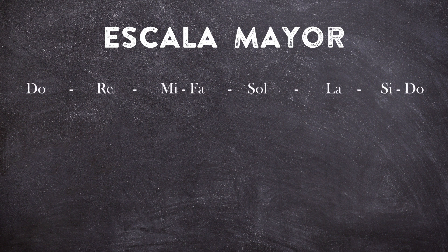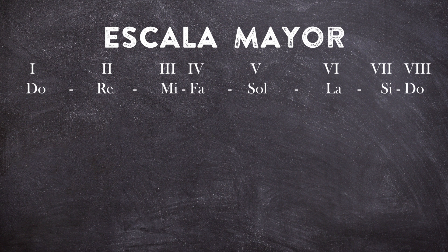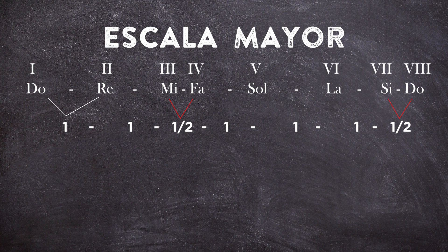Aquí tenemos do, re, mi, fa, sol, la, si y do. Enumerándolas por grados: primer grado do, segundo grado re, tercero mi, cuarto fa, quinto sol, sexto la, séptimo si, octavo do. Entonces entre el tercero y cuarto hay medio tono, y entre el séptimo y octavo hay medio tono, y entre los demás grados debe haber un tono: del primero al segundo, del segundo al tercero, del cuarto al quinto, del quinto al sexto, y del sexto al séptimo.